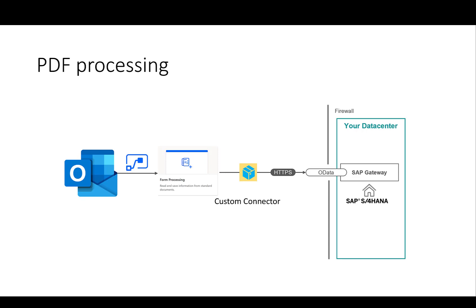Looking at the overall process flow again, we have started by creating the trigger for Outlook and created our forms processing step. So now we have all the information in place to actually create the products in the SAP system. In this video, we'll focus on the custom connector to actually create products in SAP.